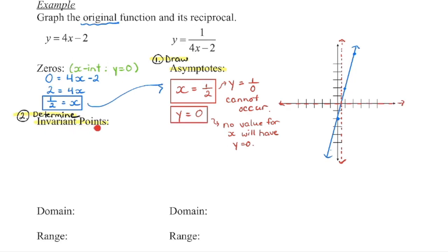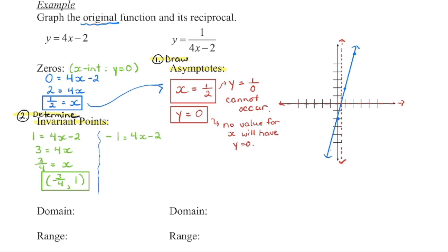Next we determine the invariant points. They occur when y equals positive 1 and when y equals negative 1. I'll find the x-values using the original function since it's easier to solve. Substituting y equals 1: adding 2 to both sides and dividing by 4 gives x equals three quarters — that's our first invariant point. Substituting y equals negative 1: adding 2 to each side and dividing gives x equals one quarter. So when x is one quarter, y is negative 1. These points fall on the original 4x minus 2 graph and will be the same on the reciprocal.